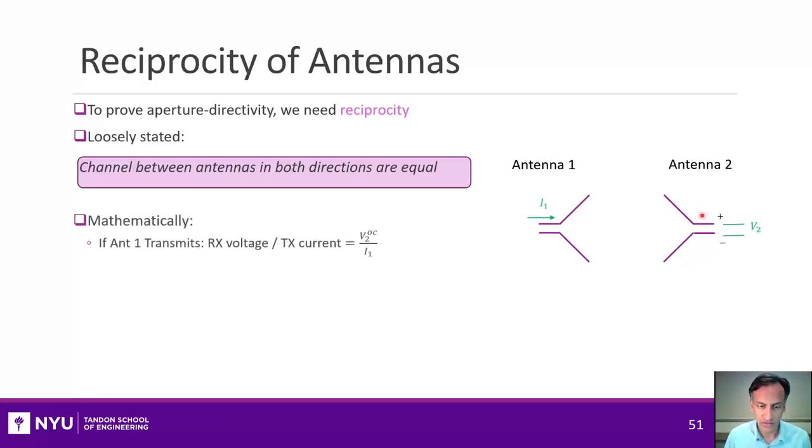You might have heard this, and what this basically in loosely stated is this: if I have two antennas, antenna 1 and antenna 2, and in one case one transmits and the other receives, and then I switch the other transmitting and the other receiving, the channel in both directions are the same. That's loosely what it says. More precisely, you can define it like this. Suppose that I put some input current onto one antenna, and then I measure the open circuit voltage at the terminals of the second antenna. Then, so one is transmitted, the other is received. And then I flip it.